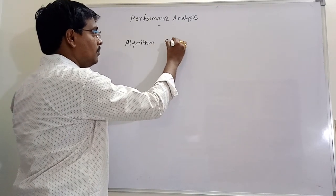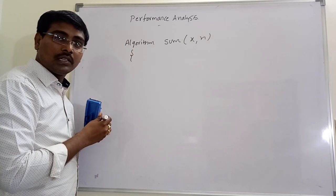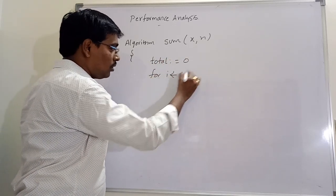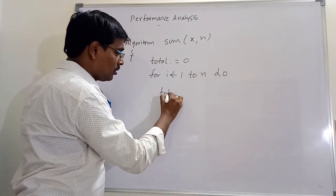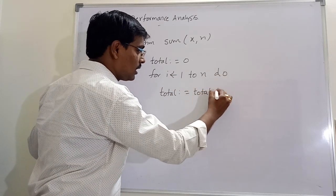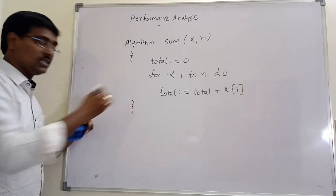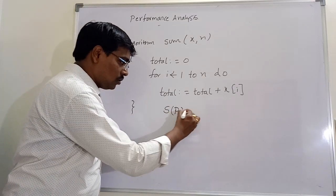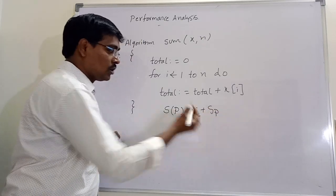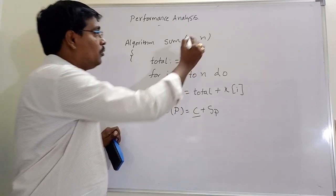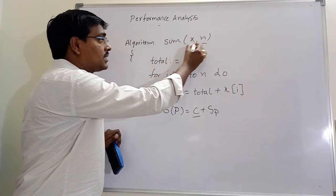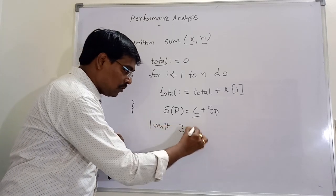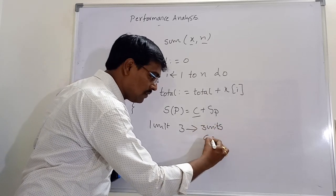Consider one more example: an algorithm for the sum of array — Sum(x, n). Initially, total = 0. For i equal to 1 to n, do: total = total + x[i]. This is an algorithm for calculating the sum of an array. So S(P) = C + S_P. To calculate the fixed part, we have three variables: x, n, and total.